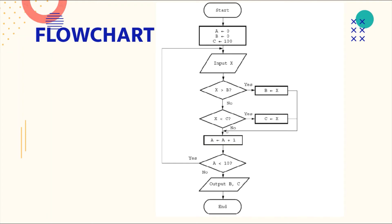If that condition is also false, then a = a + 1 — the incrementation occurs in a process rectangle. Connect all these branches with arrows into one path. Then there is another decision diamond: 'a < 10?' If a is less than 10, loop back to the start of the repeat block.